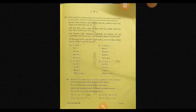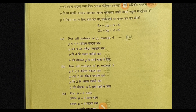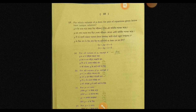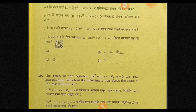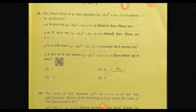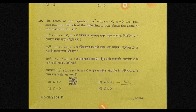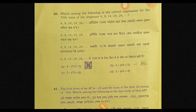Question number 16 — all values of b except 4. Question number 18, option B. Question number 19, option B. Question number 20, option B.